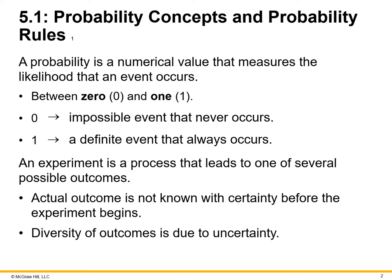An experiment is a process that leads to one of several possible outcomes. Actual outcome is not known with certainty before the experiment begins. So, we don't have an exact answer before we even conduct the experiment. The experiment is gathering data and business analytics and deriving to a conclusion based off an experiment. Diversity of outcomes is due to uncertainty. So, if we have multiple sets of outcomes, of probable outcomes and probability, it's uncertain the exact answer or outcome that's going to be defined.